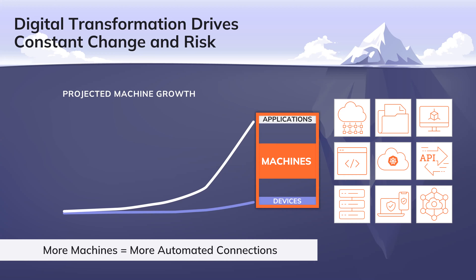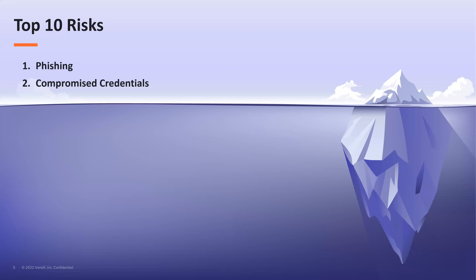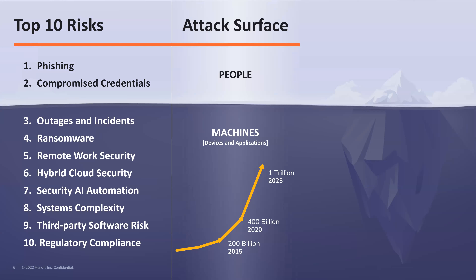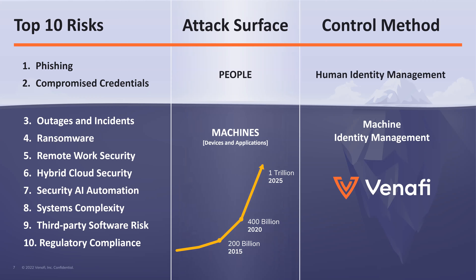Security starts with identity, especially for digital transformation initiatives. Gartner, the most widely respected technology analyst company, at the beginning of 2022 stated that the top 10 risks are areas organizations should focus on to increase security efficacy. Two of the 10 risks are focused on protecting people, and the remaining eight are focused on protecting and securing machines. The attack surface for people on an enterprise network remains relatively flat, but the number of devices continues to grow, and the volume of applications is skyrocketing — projected to reach one trillion machines over the next three years.